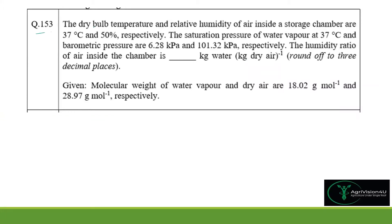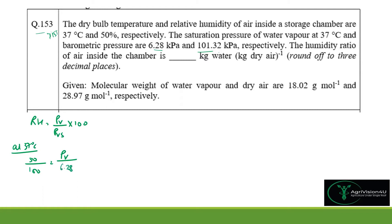The last question: the dry bulb temperature (DBT) and relative humidity (RH) of air inside a storage chamber are given. The RH is 50%. The saturation pressure of water vapor at 37°C is 6.28 kPa, and the total barometric pressure is 101.32 kPa. We need to find the humidity ratio. Using RH = P_v / P_vs: 0.50 = P_v / 6.28, so P_v = 3.14 kPa.